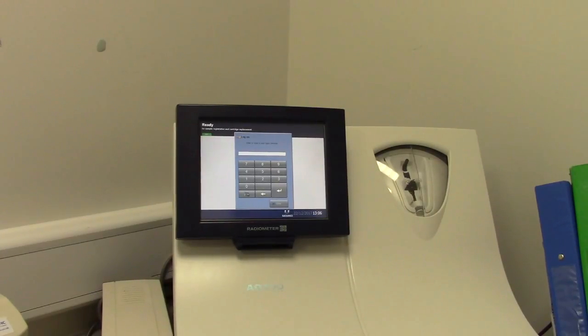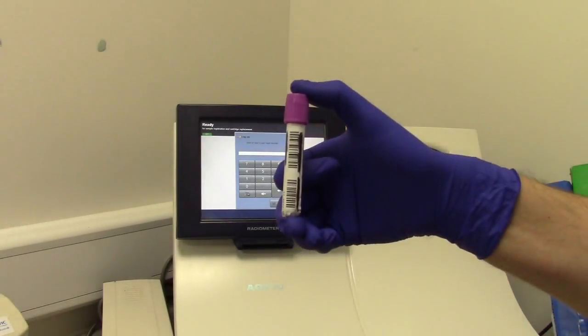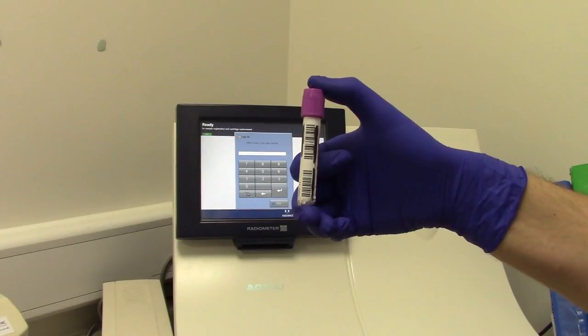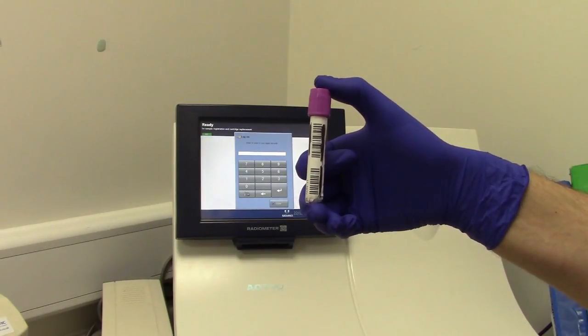You need to have 2 mLs of blood in a small purple top Vacutainer and have the patient's barcode ID attached to the tube.